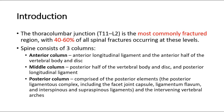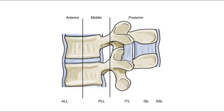The spine consists of three columns: anterior, middle, and posterior columns. The anterior column consists of the anterior longitudinal ligament and the anterior half of the vertebral body and disc.